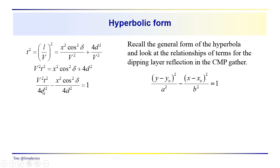We have v squared t squared over 4d squared, which we can rewrite as t squared over 4d squared over v squared. Subtracting the x term from both sides, we have x squared cosine squared delta over 4d squared equal to 1. So effectively we have it in hyperbolic form, where A equals 2d over v and B equals 2d over cosine delta.